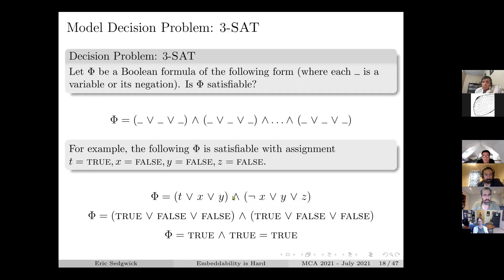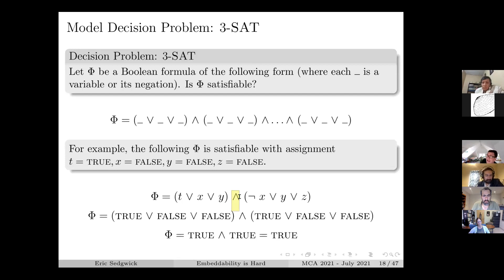Let's take 3-SAT as a model decision problem. This is a Boolean formula in 3-CNF form: you have some clauses, each with three terms - some variables like x and also negations of variables. Within clauses you have ORs, and then you string all the clauses together with AND. The question is: is that formula satisfiable? Is there an assignment to the variables T, X, Y, Z so that that formula is true?